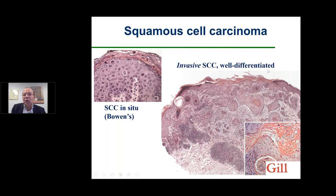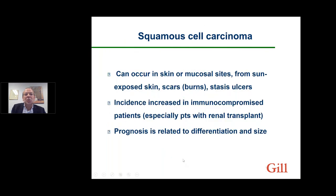This is an example of an invasive squamous cell carcinoma. We call it well-differentiated because the cells actually resemble the normal epidermis. Squamous cell carcinomas can occur in skin or mucosal sites from anywhere on the body — usually from sun-exposed skin, but they can also arise in scars or other types of chronic lesions, like stasis ulcers on the legs usually associated with vascular problems.